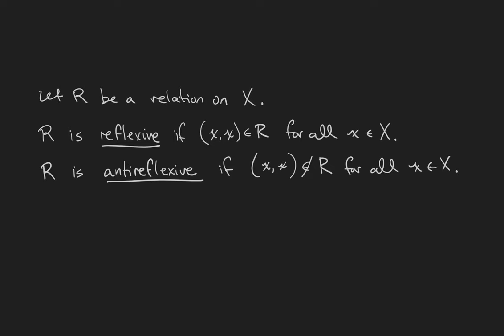If R is a relation on X, R is reflexive if every element of X is related to itself. Inversely, R is antireflexive if no element of X is related to itself.